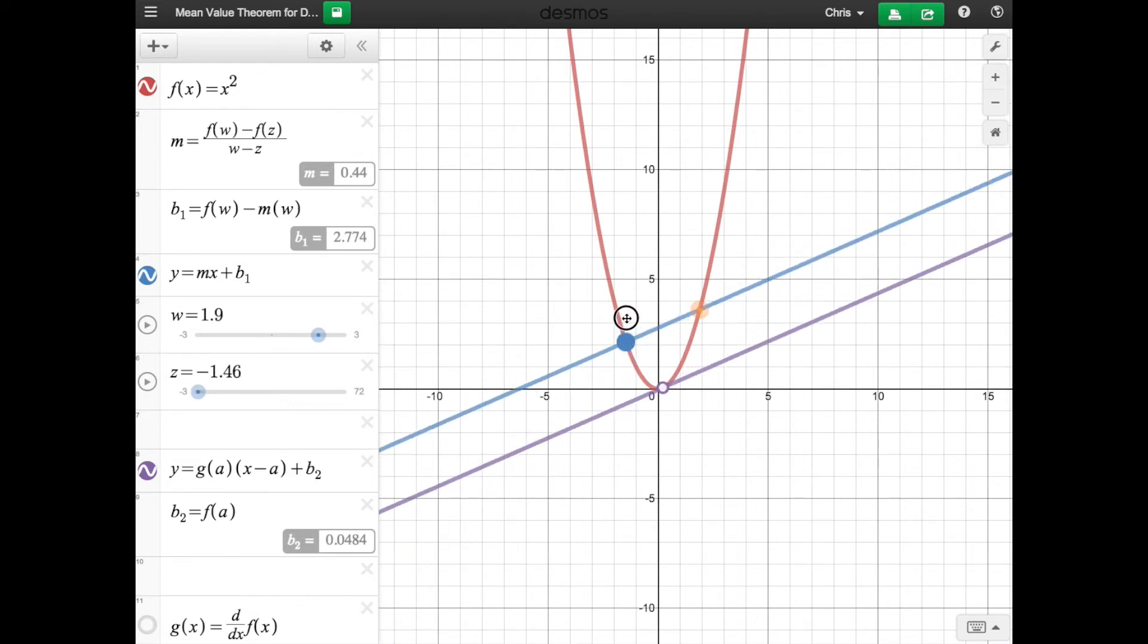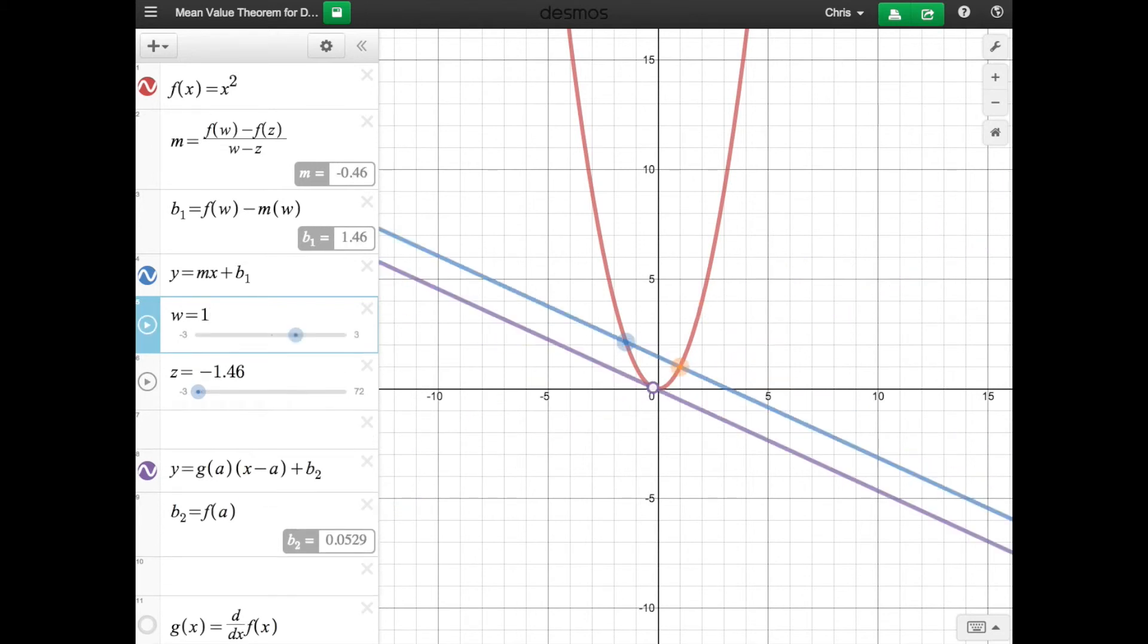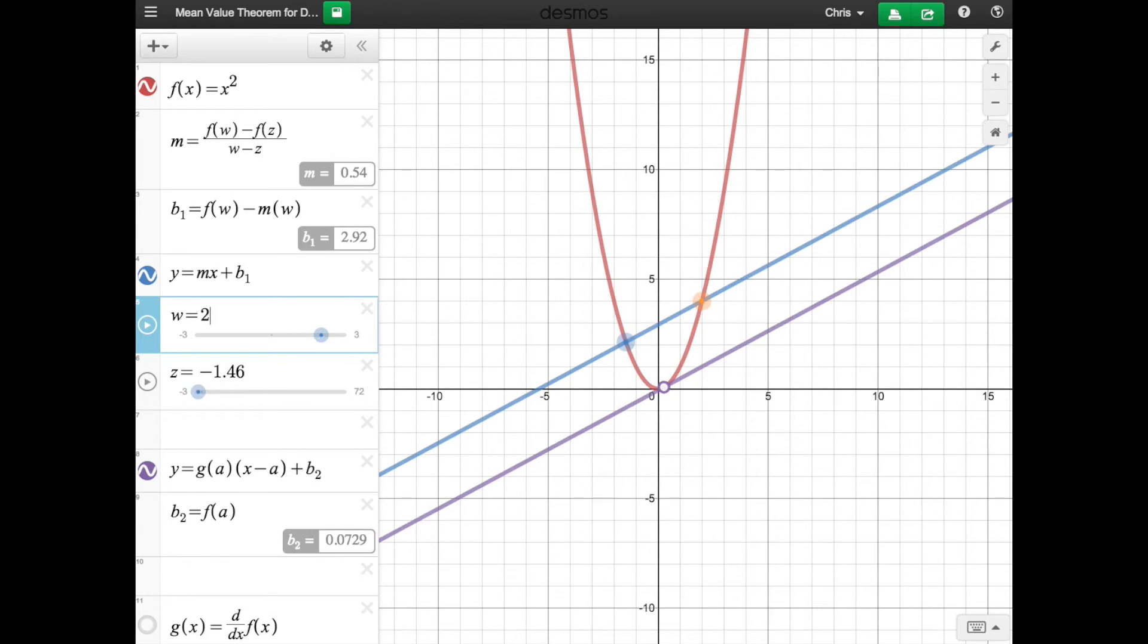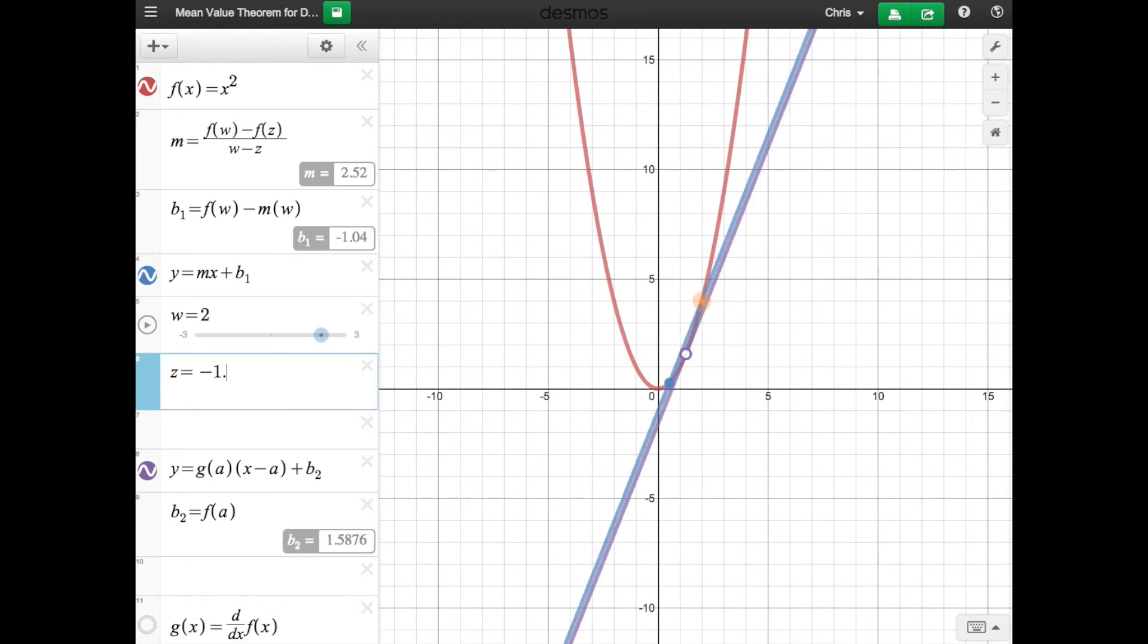And then for Rolle's Theorem, if you make the w and the z the exact same y value, so let's just say w can be equal to, let's just say two, and then our z let's just make that negative two. So now you can see right here Rolle's Theorem in play. The slope between these two points is zero.